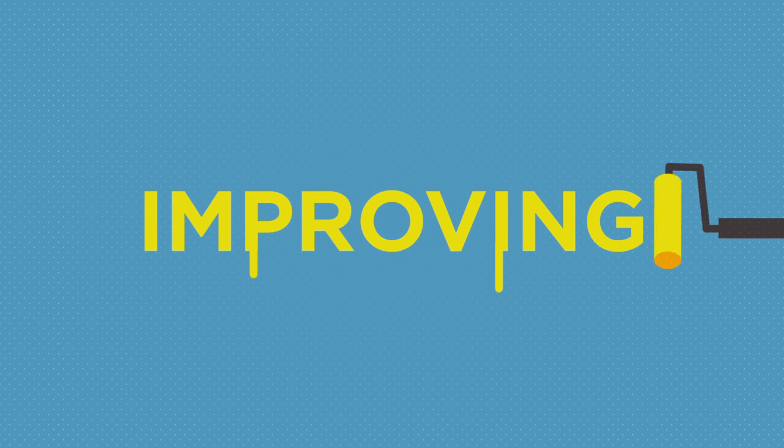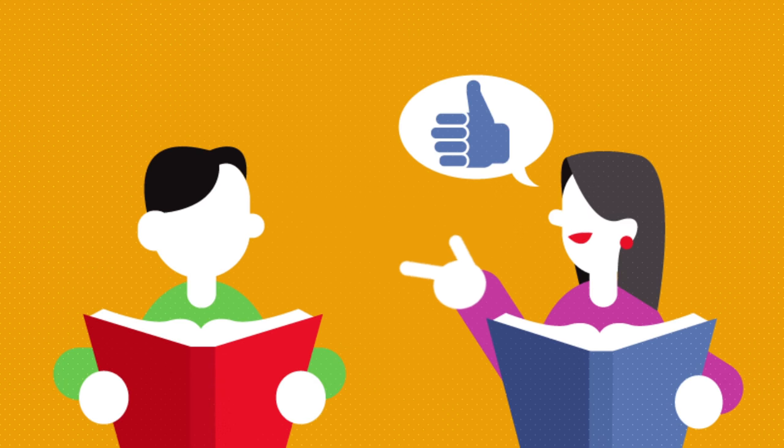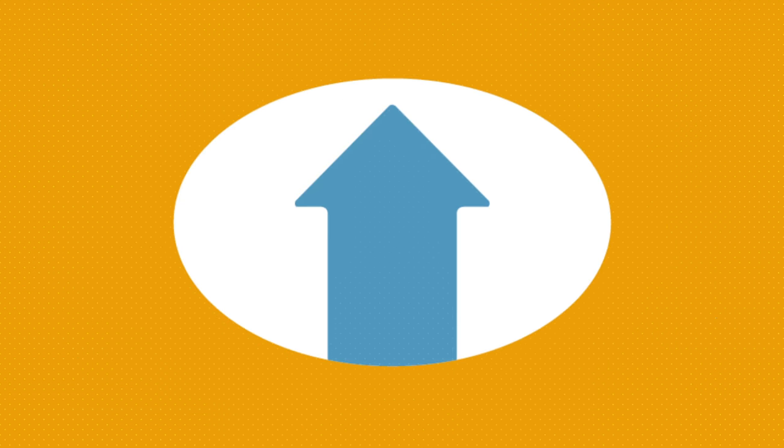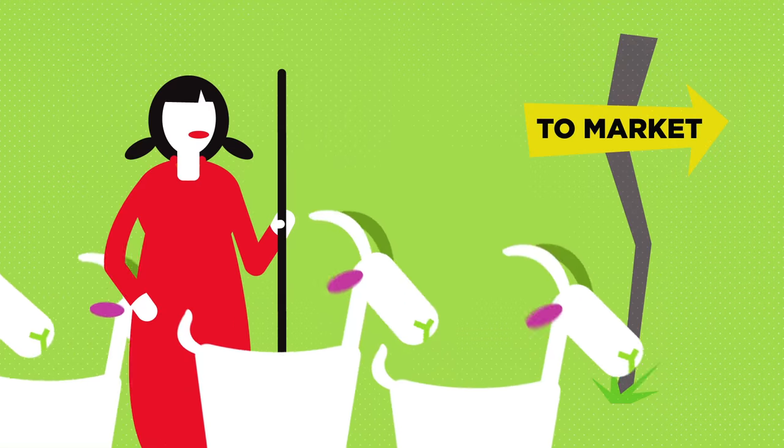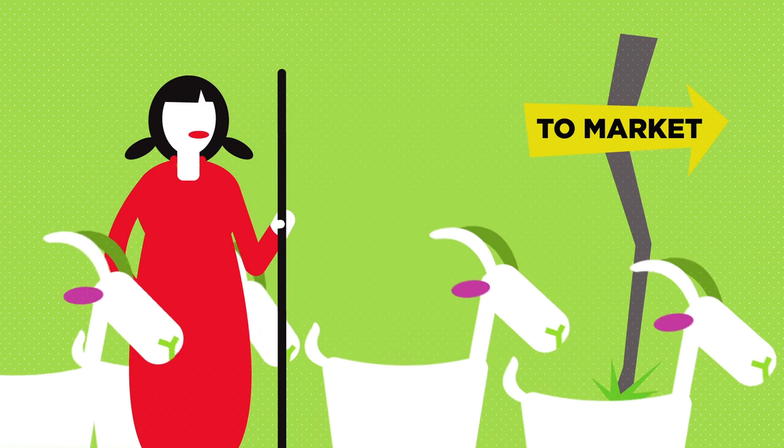Better food security means improving these livelihoods. For example, training and support on how to produce more and better food, or improving access to land, markets, or supplies.